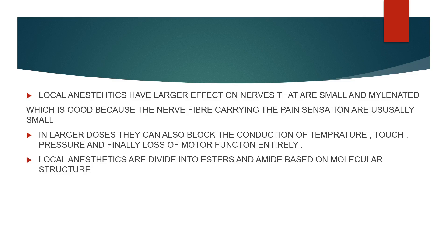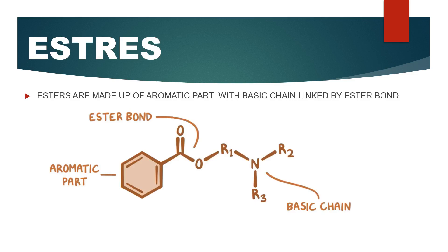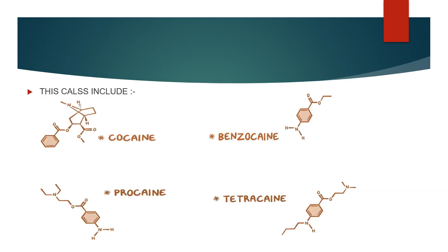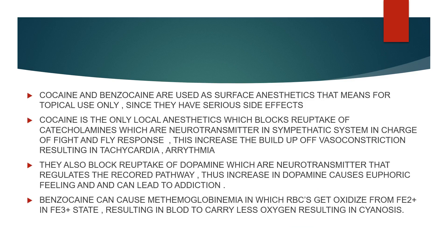Local anesthetics can be divided into esters and amides based on their molecular structure. Esters are made up of an aromatic part and a basic chain linked by an ester bond. This class includes cocaine, benzocaine, procaine, and tetracaine. Cocaine and benzocaine are surface anesthetics for topical use only, since they have serious side effects. Cocaine is the only local anesthetic that blocks the reuptake of catecholamines — neurotransmitters in the sympathetic system in charge of the fight or flight response — causing vasoconstriction, tachycardia, and arrhythmia. It also blocks the reuptake of dopamine, a neurotransmitter that regulates the reward pathway, increasing dopamine and causing the euphoric feeling associated with cocaine, which can lead to addiction.